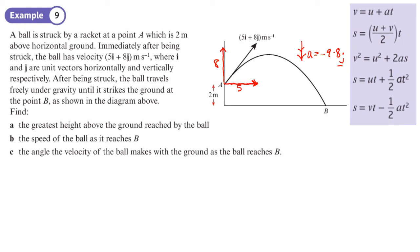Part A: greatest height. At the greatest height, the vertical velocity is zero — Vy = 0. This is to do with vertical. SUVAT. We want to find S. Remember: we might need to add 2 meters to our answer, because the point of projection is 2 meters above the ground. So be careful — don't just write down S as the final answer.